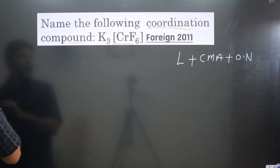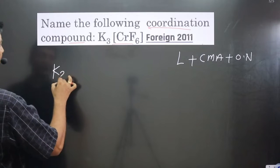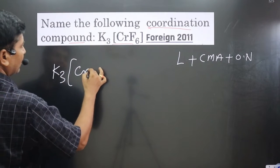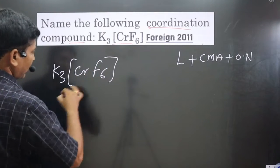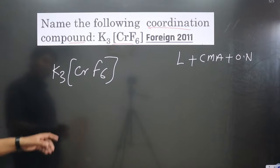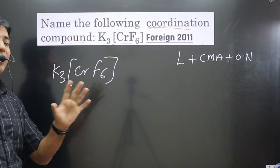We have the complex: K₃ is there, and this is Cr, and this is F₆. The species which are present inside the coordination sphere cannot be broken, but the counter ion can be broken.